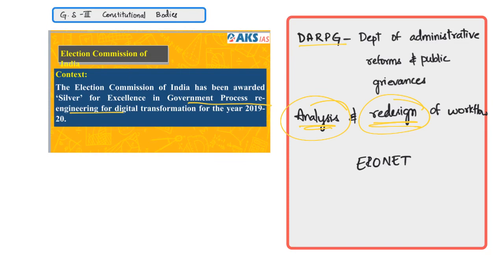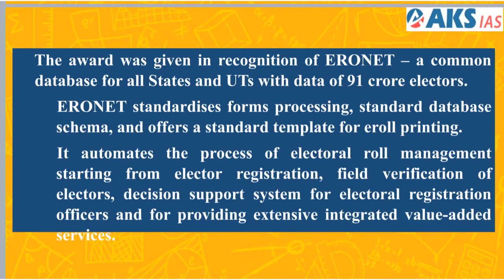This year, the Election Commission received this award because of the ERONET project. ERONET has tried to create a common database — since the Election Commission needs to conduct elections across India including state and national elections, it brought about this common database called ERONET for all states and union territories, covering data for 91 crore electors.